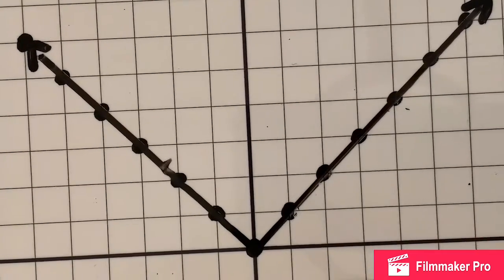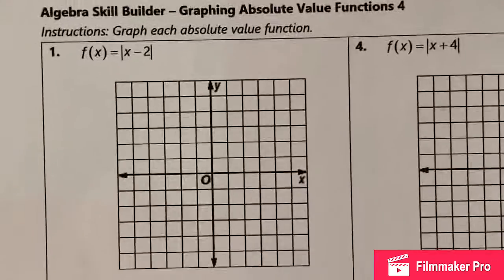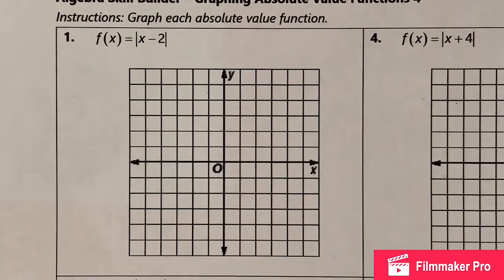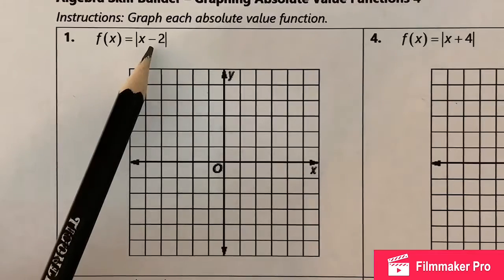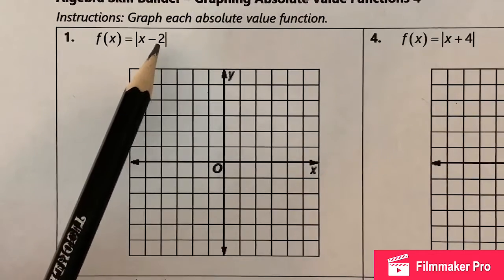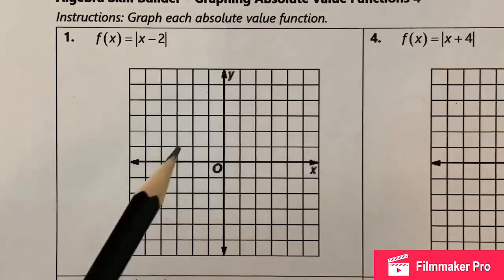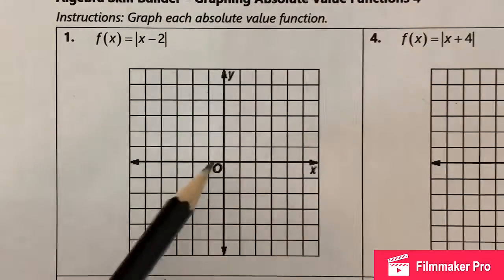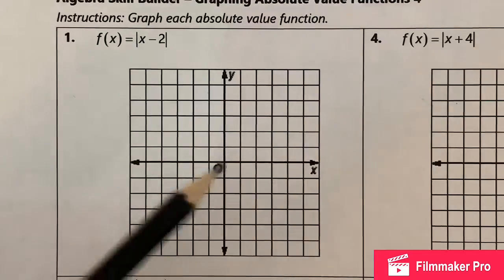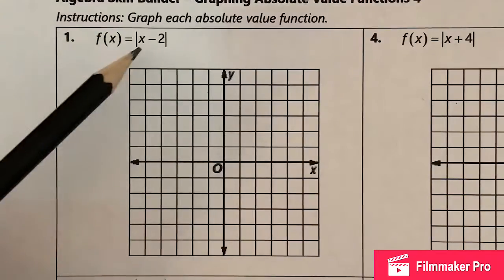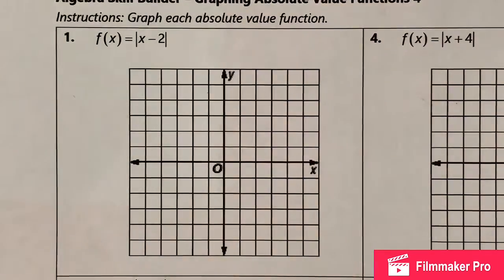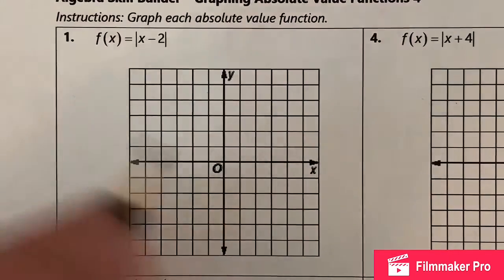Now we're going to look at some examples. The first one is the absolute value of x minus two. That minus two is going to take your parent function and slide it two units. You would think it goes backwards because your brain wants that negative two to go that way, but in actuality that negative two moves it forward — because this is a function and when you unwrap everything you'll eventually get a positive two on the other side.